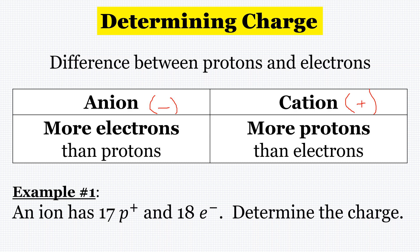Let's do an example. We have an ion with 17 protons and 18 electrons — determine the charge. There are more electrons than protons, and there's one more electron than proton. So the charge is going to be negative one. One is how many more electrons we have than protons, and the negative reflects which charge wins — there's more negative charge than positive.